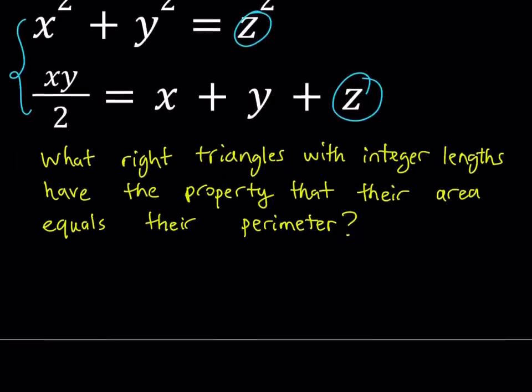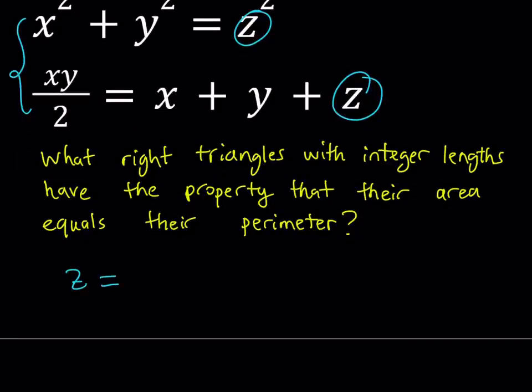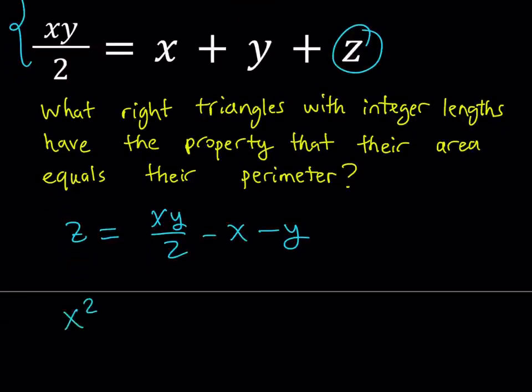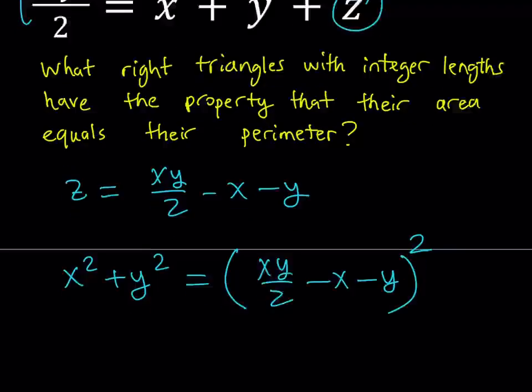If you isolate z, it's going to equal xy/2 - x - y. And let's substitute that in the Pythagorean relationship. x² + y² = z², which can be written as (xy/2 - x - y)². And then you're going to square that quantity.